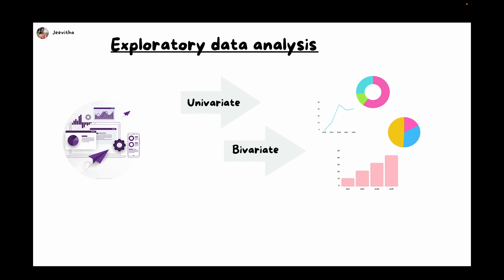When I say bivariate, it's analyzing two variables. You can use bar plot, scatter plot, line plot, box plot, and violin plot to analyze two variables. When I say multivariate, it's analyzing multiple variables — you can use a heat map or pair plot. This is how you find the relationship between variables and figure out the trend and pattern available in our data. Most questions can be answered just by doing exploratory data analysis, so it's a very important aspect of the machine learning project workflow.